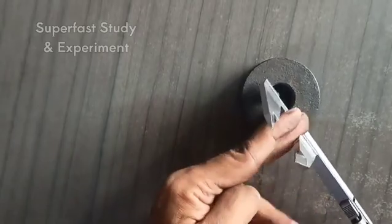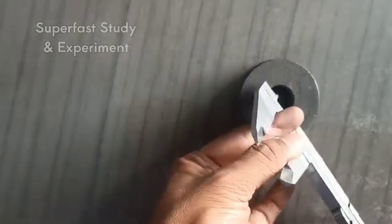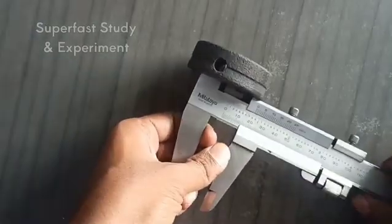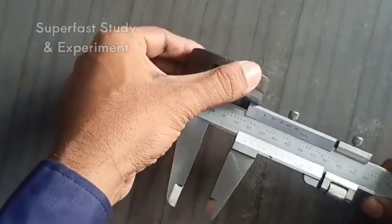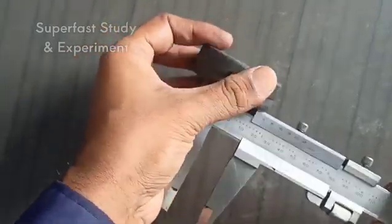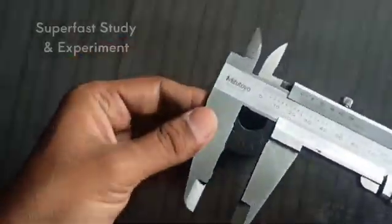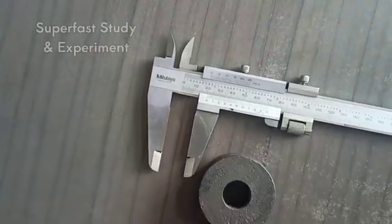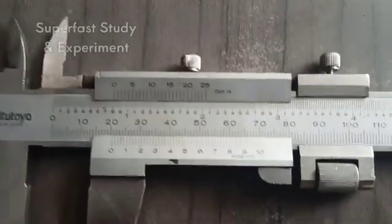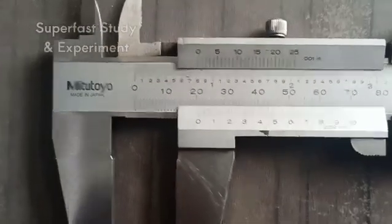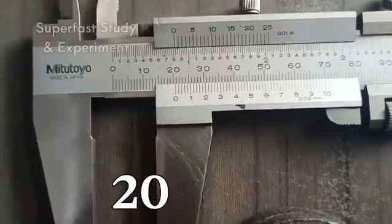After inserting it properly, we will spread it properly and after spreading it, we will lock it so that our reading is correct. There should not be any error at all. We have locked it. Now we will take out that object and see the reading again. Now here we can see that our zero line in the main scale is ahead of 20 and behind 21, between 20 and 21. So first of all we will write 20.